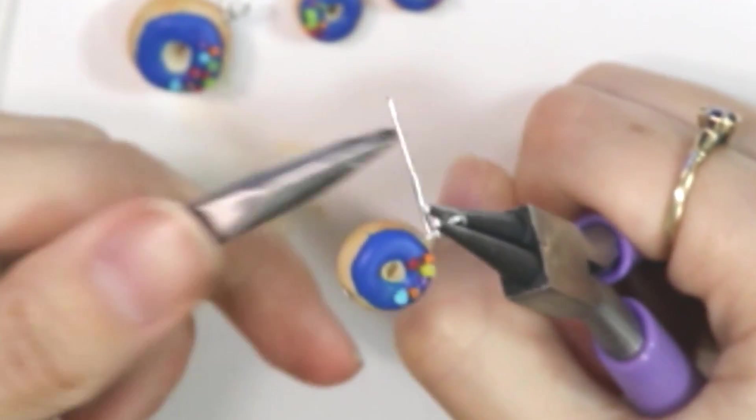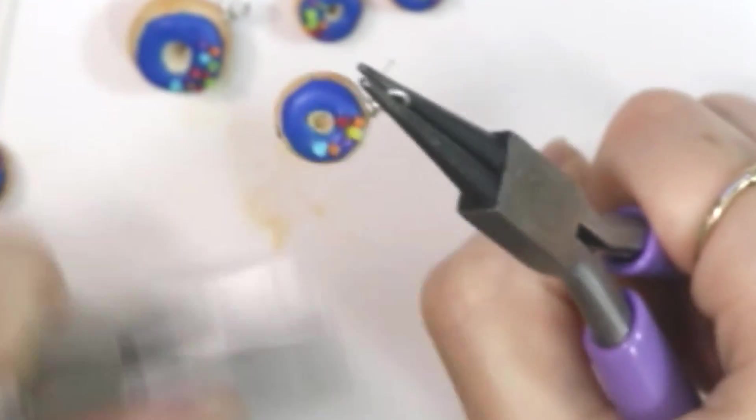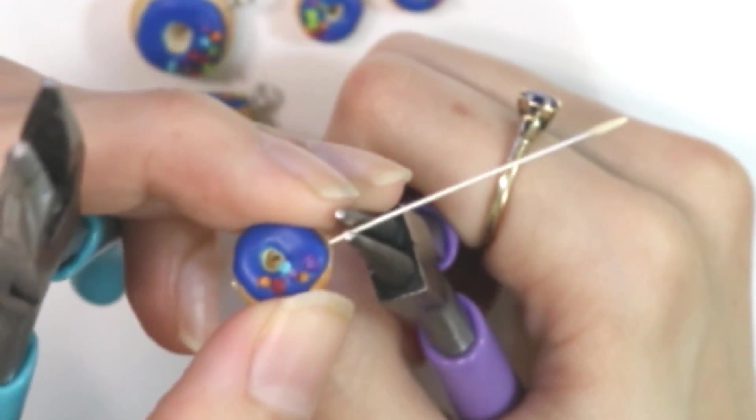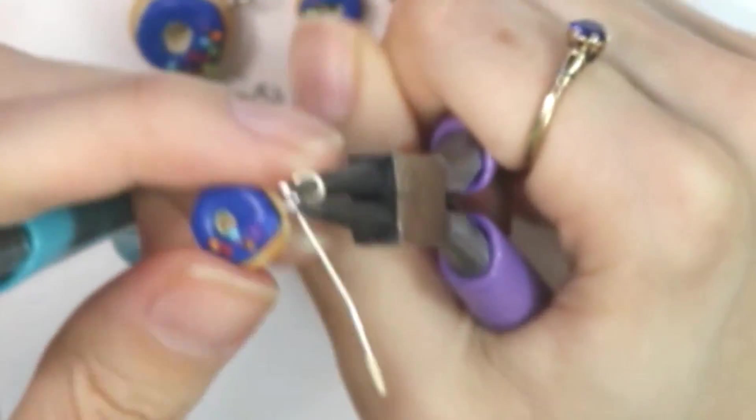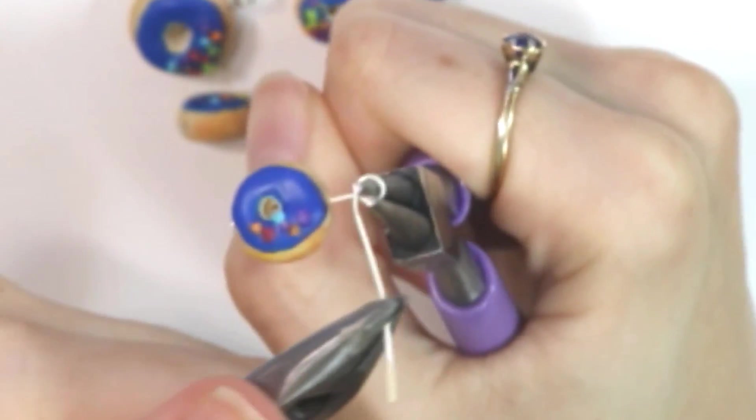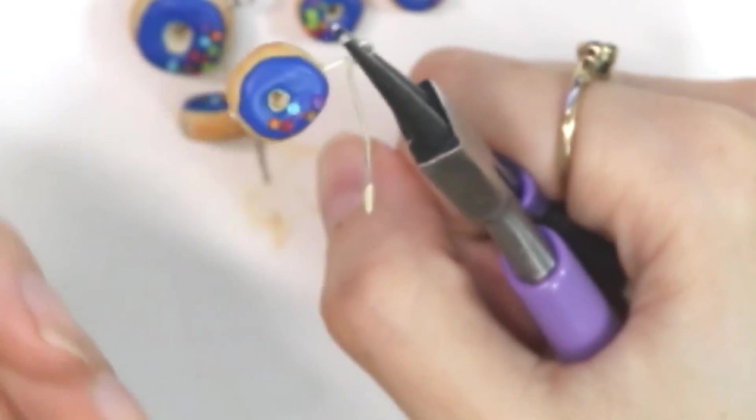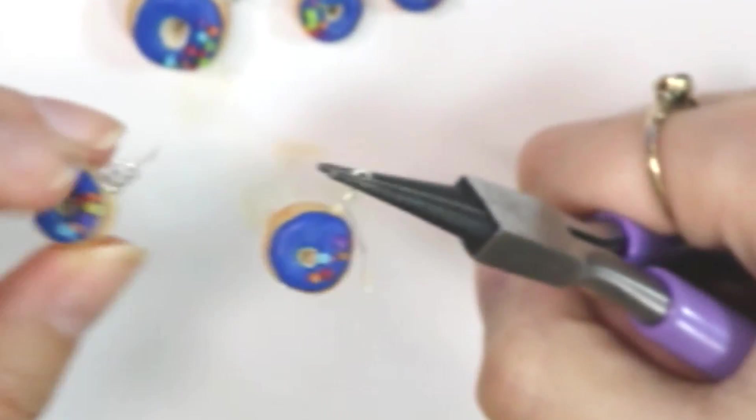You want to make sure you get these about the same size. I like to hold it in place and loop it around. I have a good gauge for this since I've been doing this a while, but you can always hold up your one that you've made to make sure it looks okay.